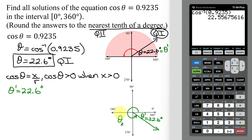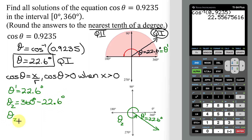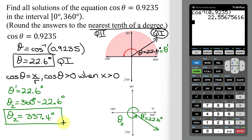You can see that theta 2 plus the reference angle has to add up to 360. So theta sub 2 is going to equal 360 degrees minus the reference angle of 22.6 degrees. So what is my second solution? 360 minus 22.6 is 337.4 degrees. That is my second solution to this equation.